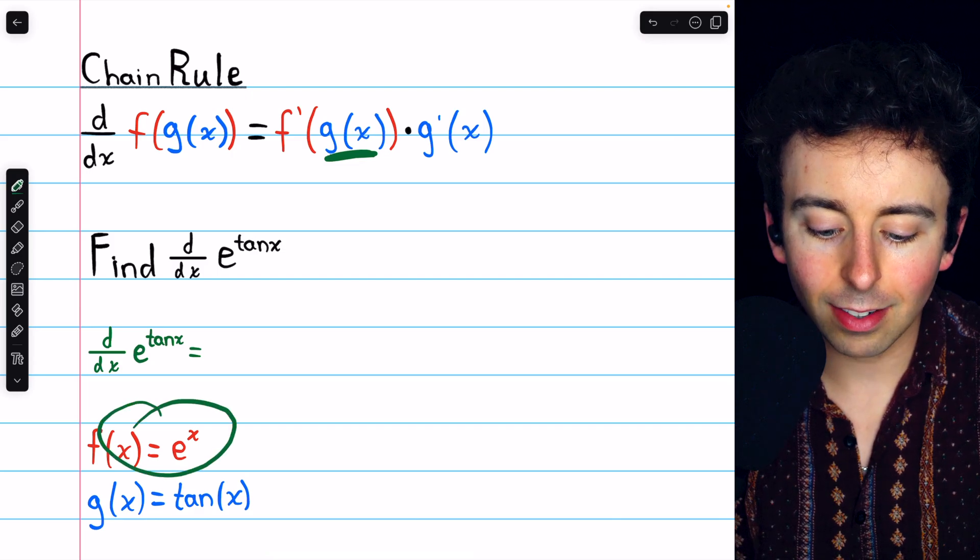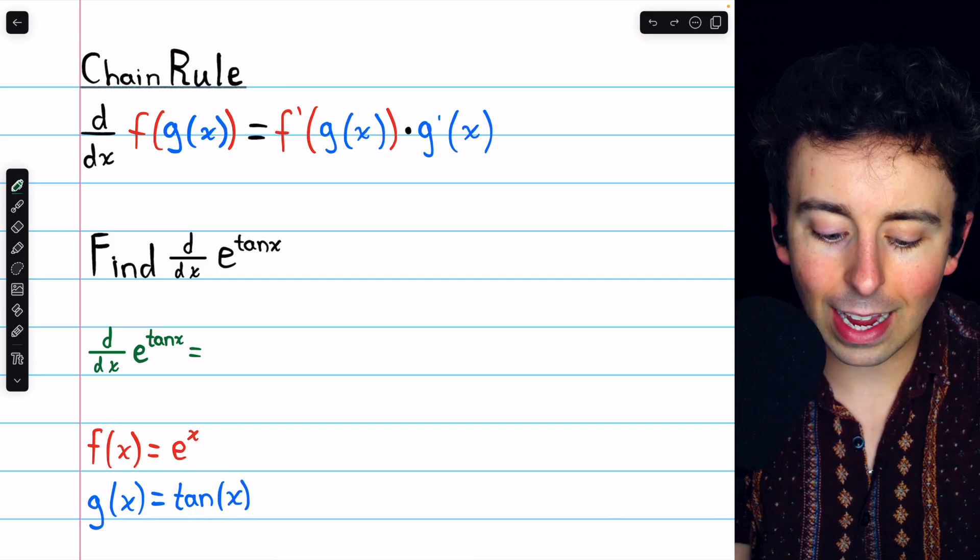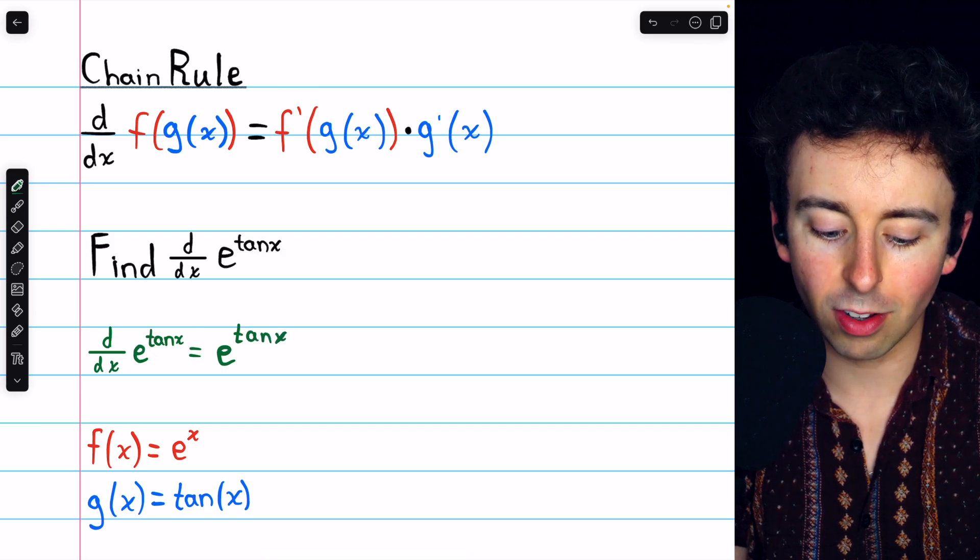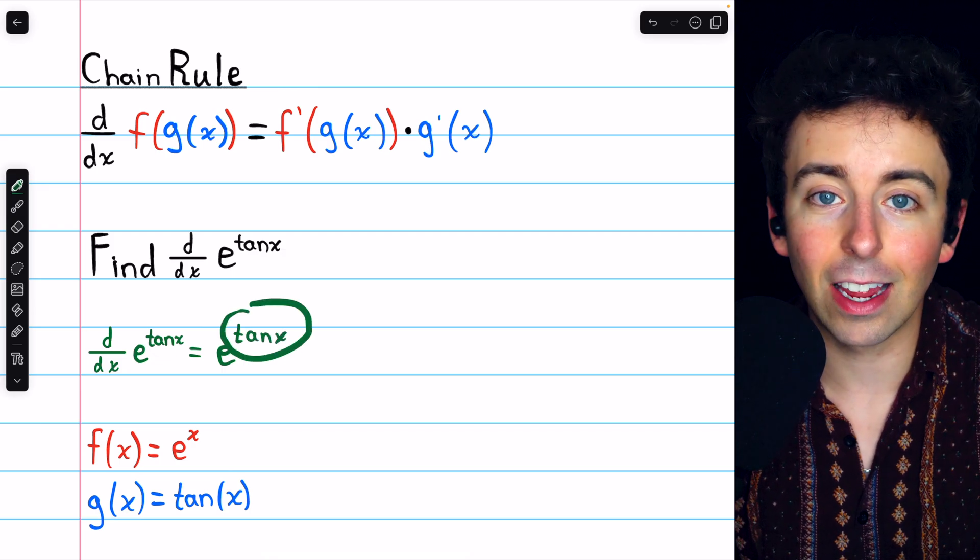f is e to the x, and the derivative of e to the x is just e to the x, so we just have e to the, don't change the inside function, we've got to leave it as tangent x.